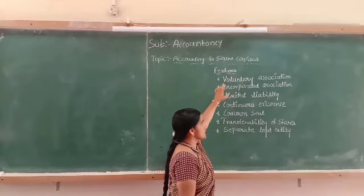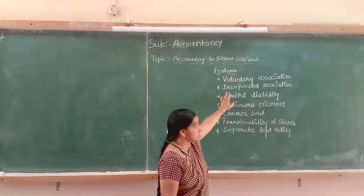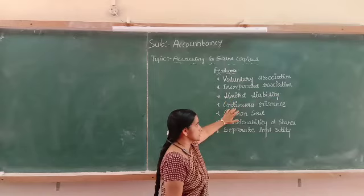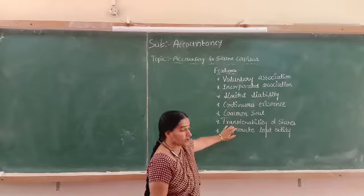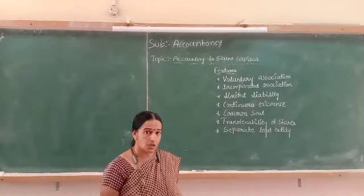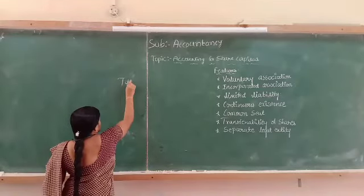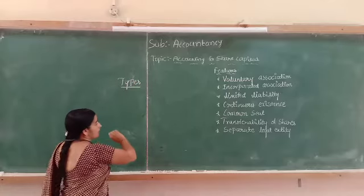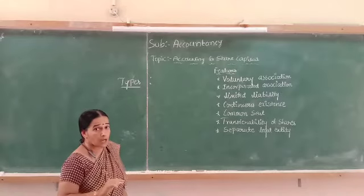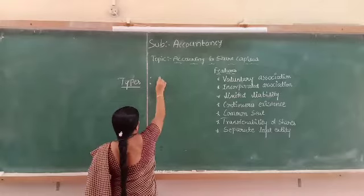So these are the main features of the company: it is a voluntary association, then incorporated association, limited liability of each shareholder, continuous existence, common seal and transferability of shares, and separate legal existence. Next are the types of companies — the main categories are based on liability and based on the number of members.